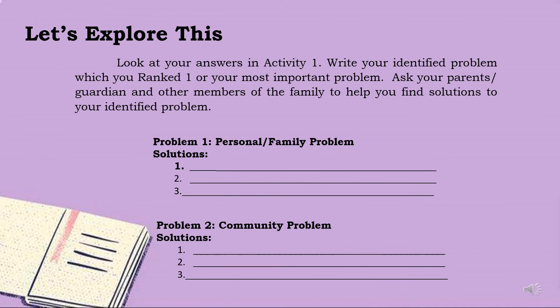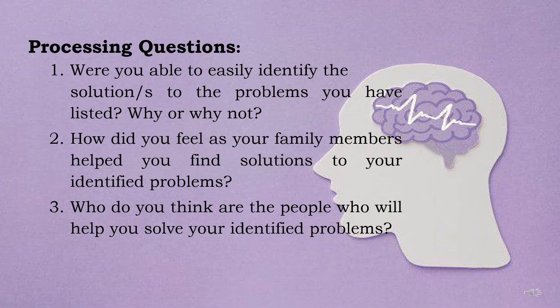For another activity, which is Let's Explore This: Look at your answers in Activity 1. Write your identified problem ranked number 1, your most important problem. Ask your parents or guardian and other members of the family to help you find solutions to your identified problem. Problem 1 is a personal or family problem — write your three possible solutions. Problem 2 is a community problem — write your three possible solutions. Then answer these three processing questions: 1. Were you able to easily identify the solutions to the problems you have listed? Why or why not? 2. How did you feel as your family members helped you find solutions to your identified problems? And 3. Who do you think are the people who will help you solve your identified problems?